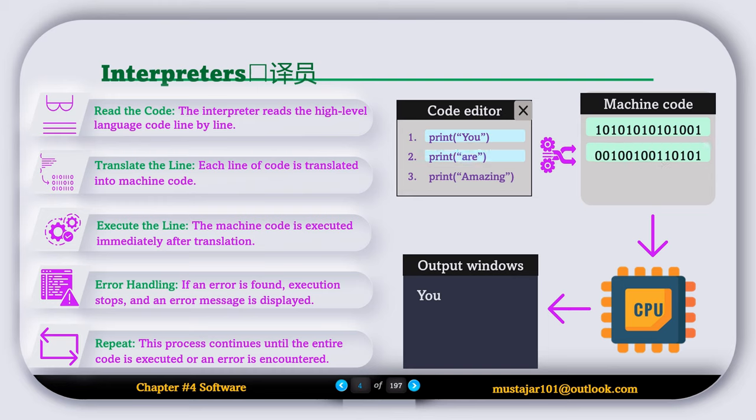It will move to the next line, translate the code to machine code, and pass the machine code to the CPU, which will show the output. Similarly, it moves to the last line, translates that line of code to machine code, and the CPU reads that machine code and shows the output in the output window.